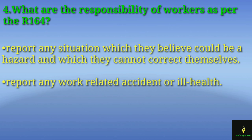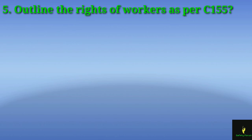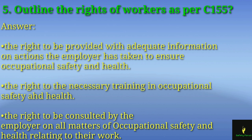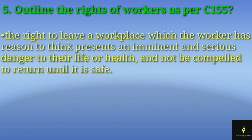The fifth question is: outline the rights of workers as per C155. Workers have the right to be provided with adequate information on actions the employer has taken to ensure occupational safety and health. They have the right to necessary training in occupational safety and health, the right to be consulted by the employer on all matters of OSH relating to their work, and the right to leave a workplace which presents an imminent and serious danger to their life or health — and not to be compelled to return until it is safe.